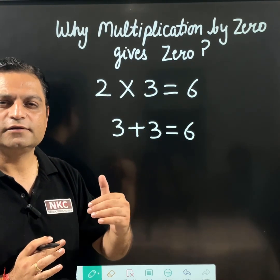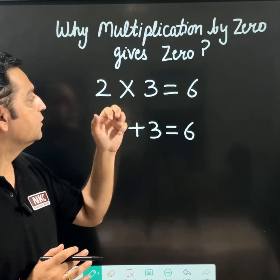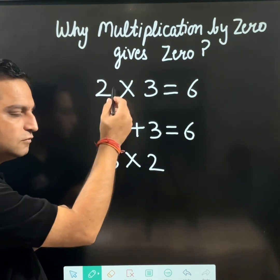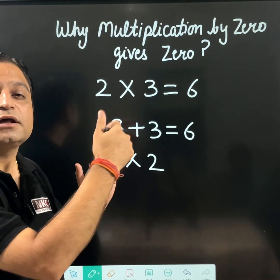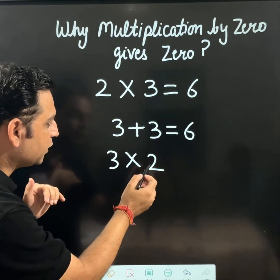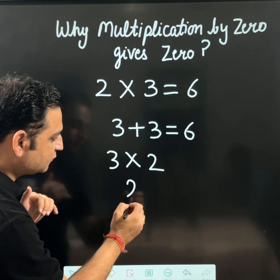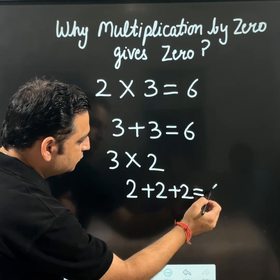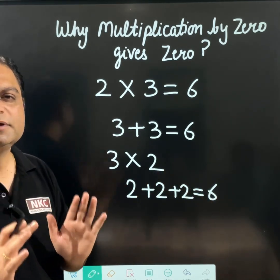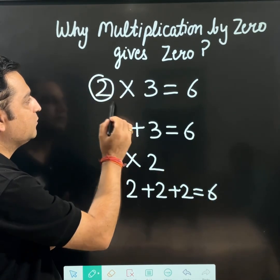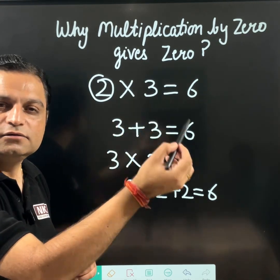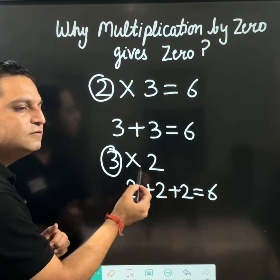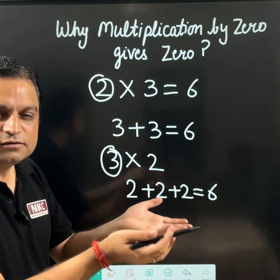If you know the basic concept, even the name says it. Like 3 times 2 — same example, 3 times 2 means you are going to write this 2 thrice. 2 plus 2 plus 2 makes 6. So this is what the meaning is. If this is 2, that means 3 is being added twice. If this is 3, that means 2 is being added thrice.